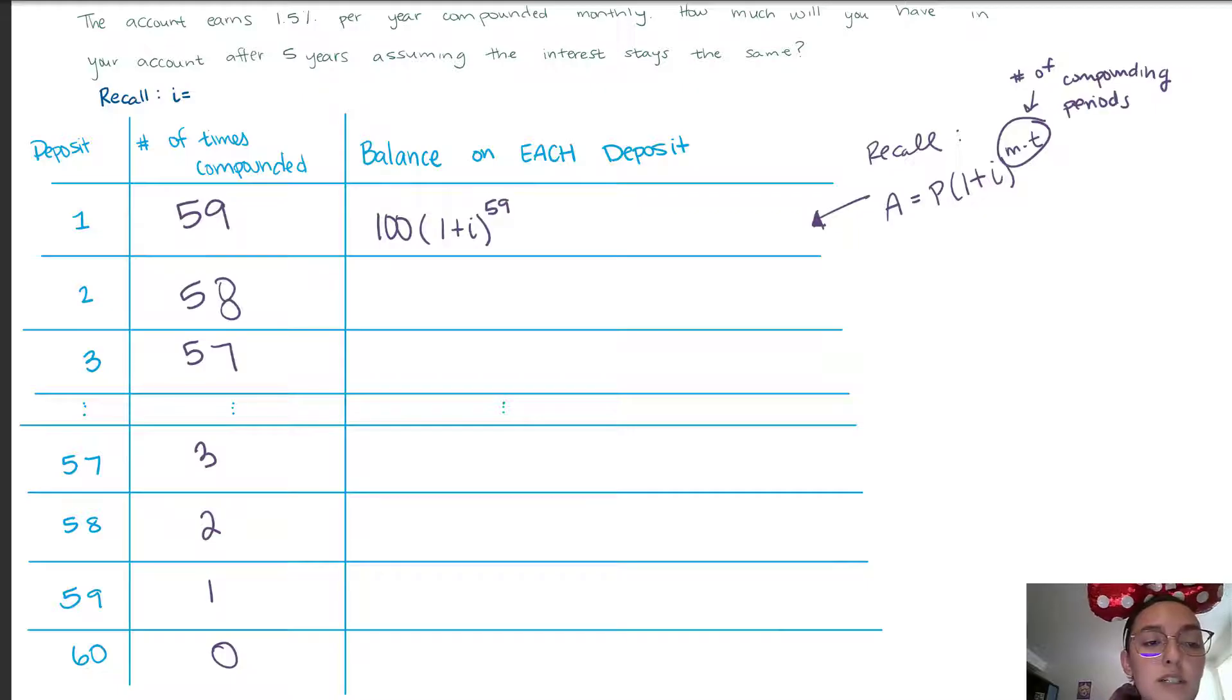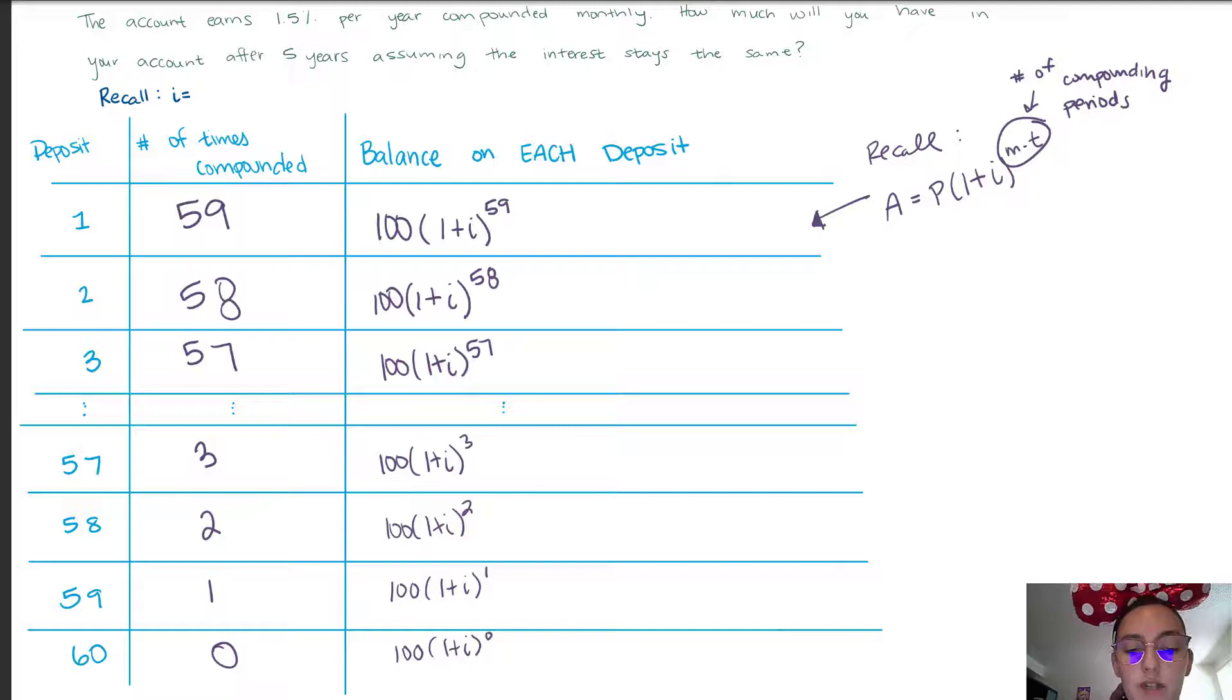So similarly then our second deposit, the total balance that we're going to gain from that is 100 times 1 plus I to the 58 because it's compounded 58 times. So now we can fill out the rest of our table.